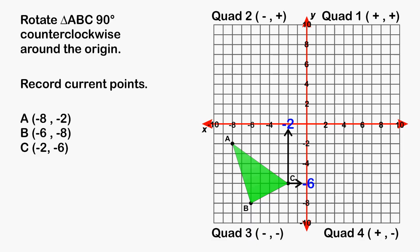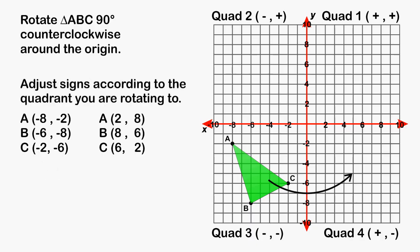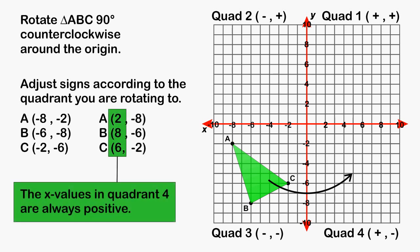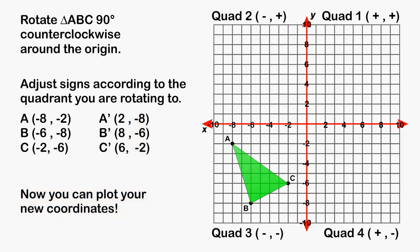After recording your original points, simply switch around the x and the y values. Don't worry about the signs at the moment — just start by switching the numbers regardless of the signs in front of them. Now, after you switch the numbers around, figure out what quadrant you are going to and adjust those signs accordingly. Because we are moving to quadrant number 4, we have to make sure that all of our x values are positive and that all of our y values are negative. Now that we have the new location of our points, we can plot them on the coordinate plane. After plotting your points, simply connect the dots, and that will be the precise location of your 90 degree rotation.